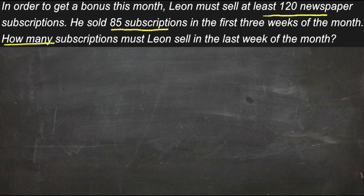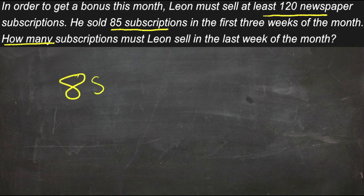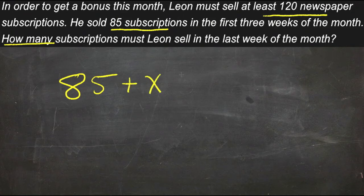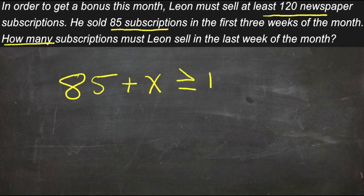So we need to know how many he needs to sell so that his 85 can be at least 120. That means he's starting with 85 and he's going to add some amount more, and that total needs to be at least, so greater than or equal to 120.